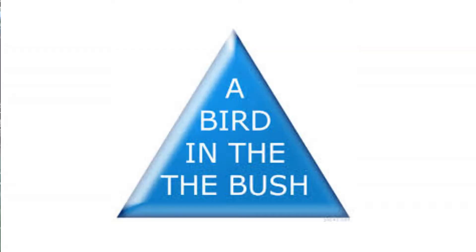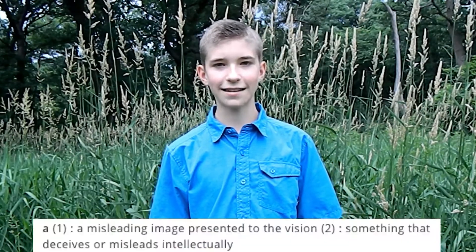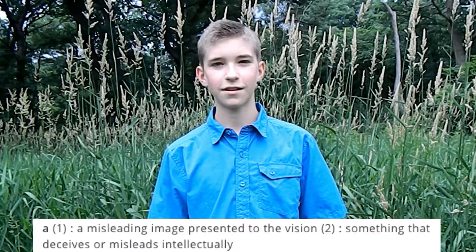I'm sure you have seen those tricks where you see something that isn't actually there. For example, most people will read this sign wrong — their eyes will skip over the extra 'the.' This is an illusion. According to the Merriam-Webster dictionary, an illusion is anything that intellectually deceives or misleads you. The most common form of illusion is the optical illusion.